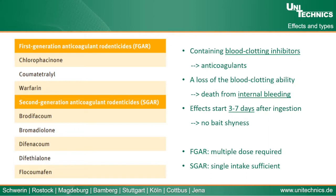These anticoagulant rodenticides contain blood clotting inhibitors, also called anticoagulants. After ingestion, they cause a loss of blood clotting ability in the rats, which eventually causes the rat to die from internal bleeding. This effect starts three to seven days after first ingestion, which is designed to ensure that the rat won't connect the ingestion of the bait with the poisonous effect — in other words, it's called 'no bait shyness.'